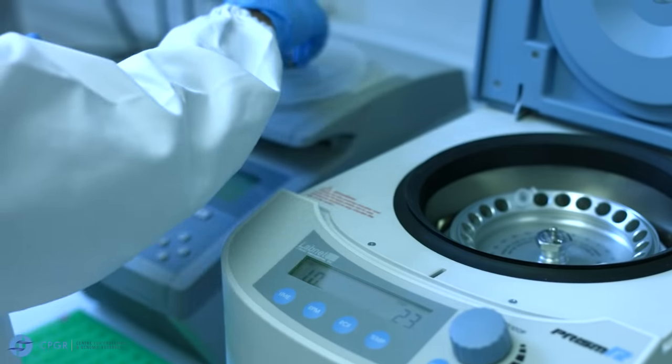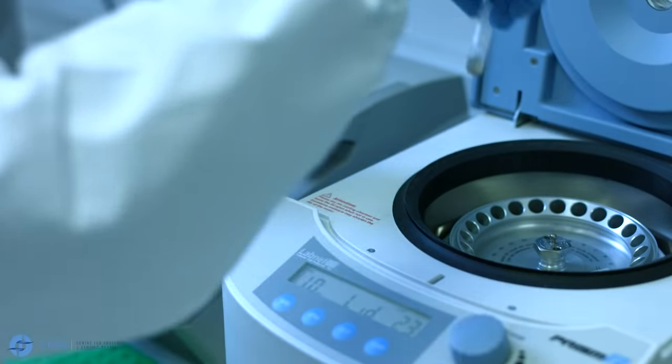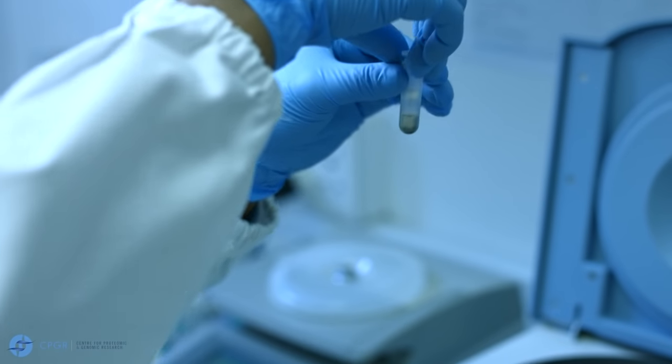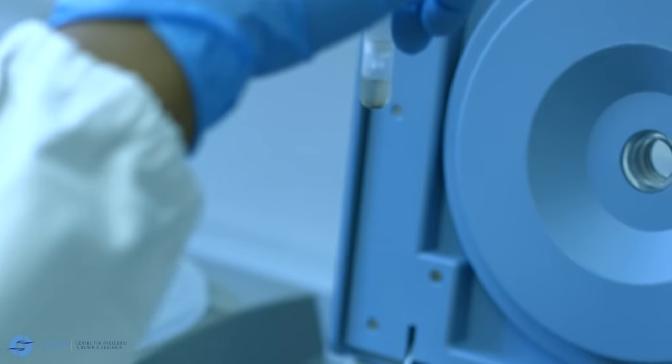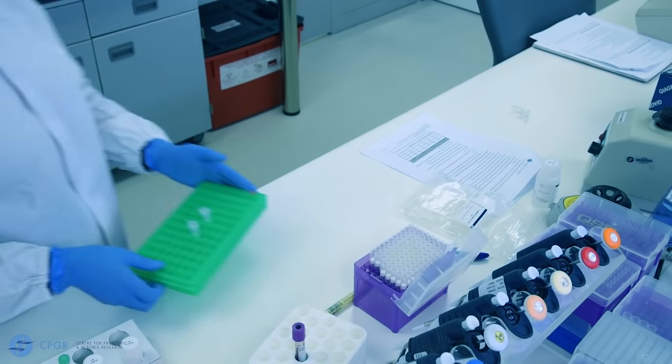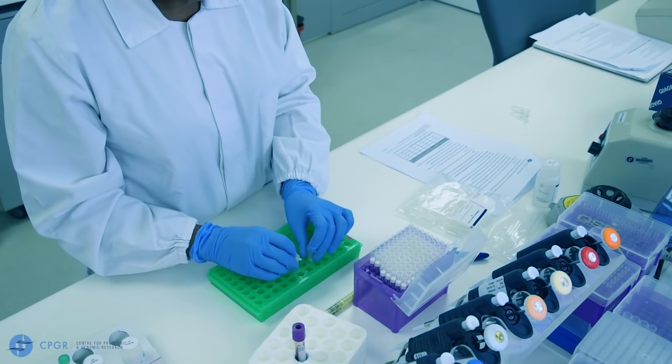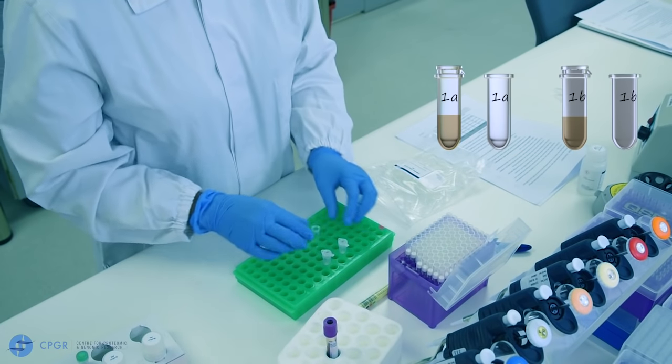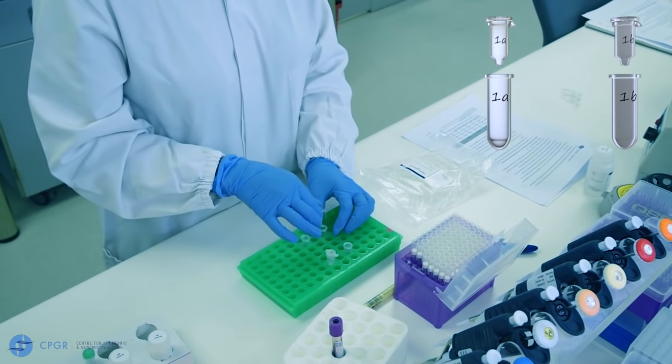At the end of the centrifugation period, check that all the filtrate is in the collection tube. If there is still some in the spin column, just repeat that centrifugation step. Discard the collection tube and transfer the spin columns to clean collection tubes.